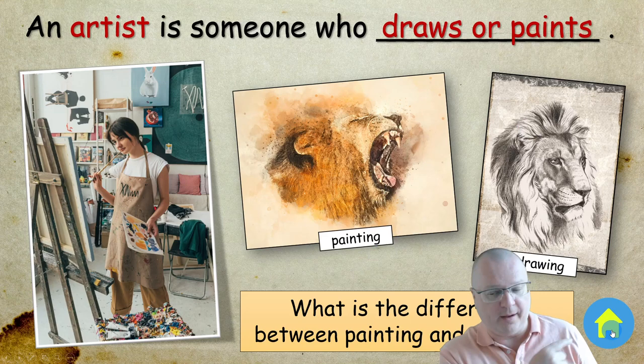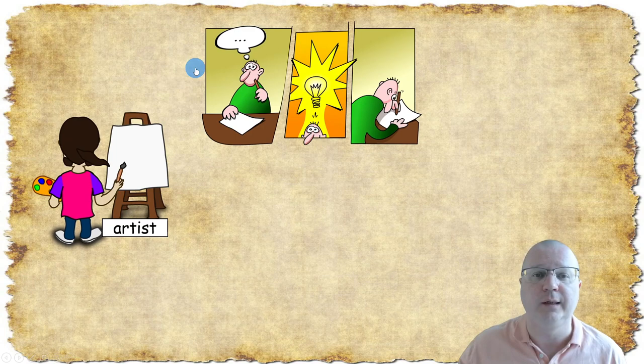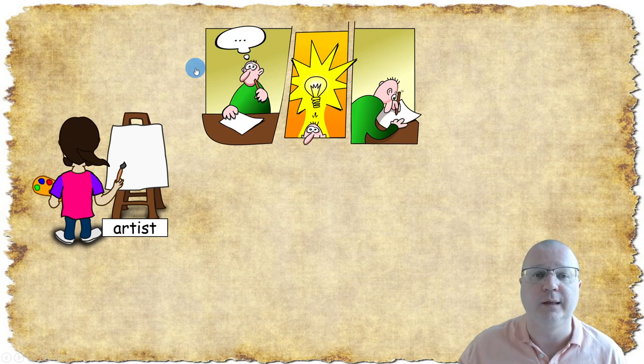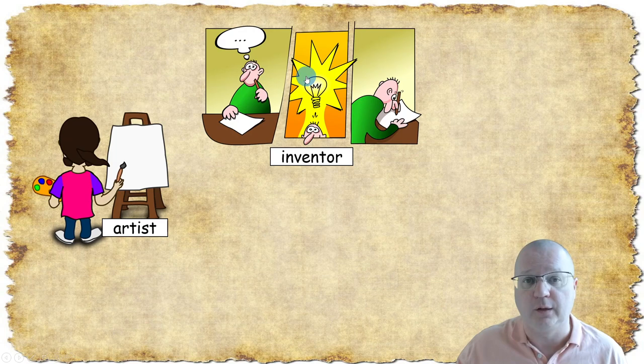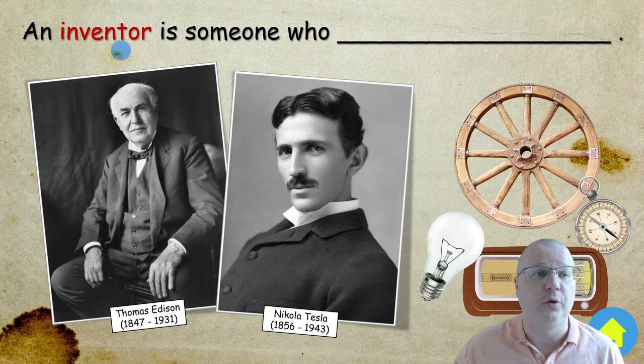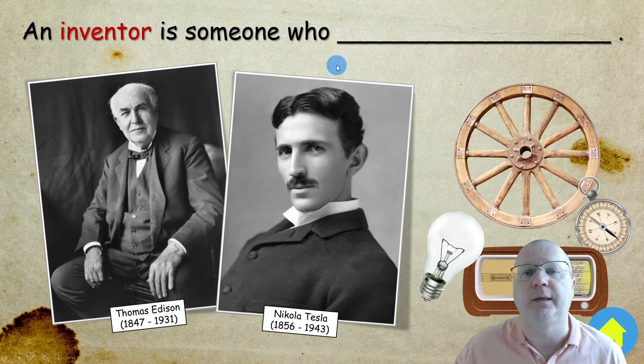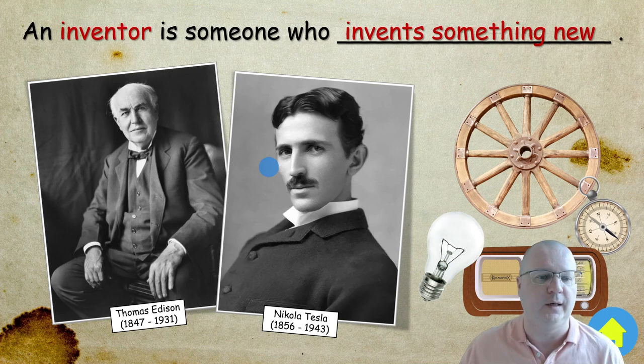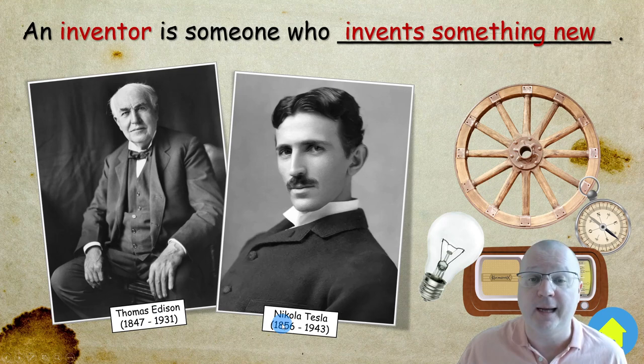Click next and again try to elicit from students who Leonardo was — he was also an inventor. Click on the image and it will take you to a slide where you can practice relative clauses: an inventor is someone who invents something new. Here we also have two famous inventors — Thomas Edison and Nikola Tesla — and you can ask your students what they know about these two great men.